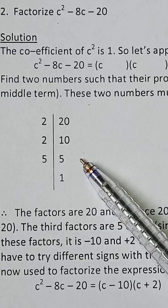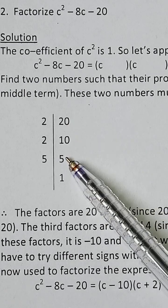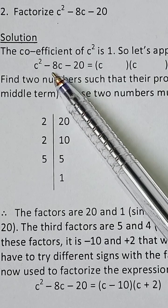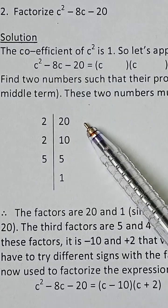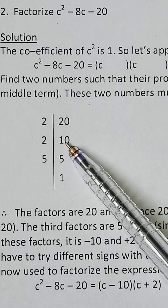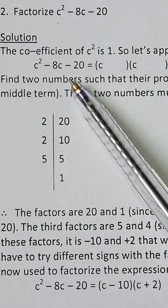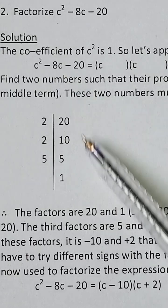Which of these pairs of factors will give you 8? If you check, 20 and 1 cannot give you 8, 5 and 4 cannot give you 8, but 10 and 2 can give us 8.